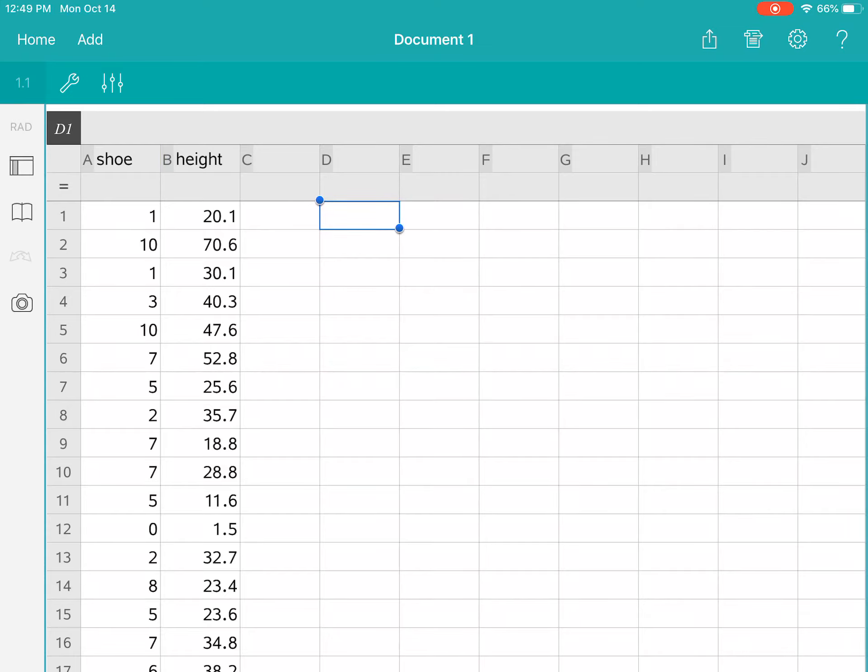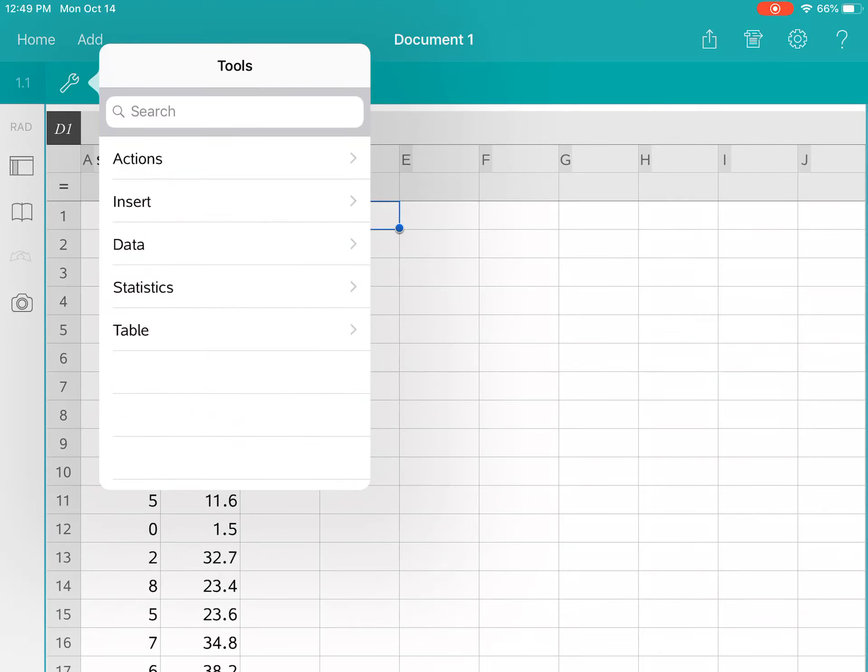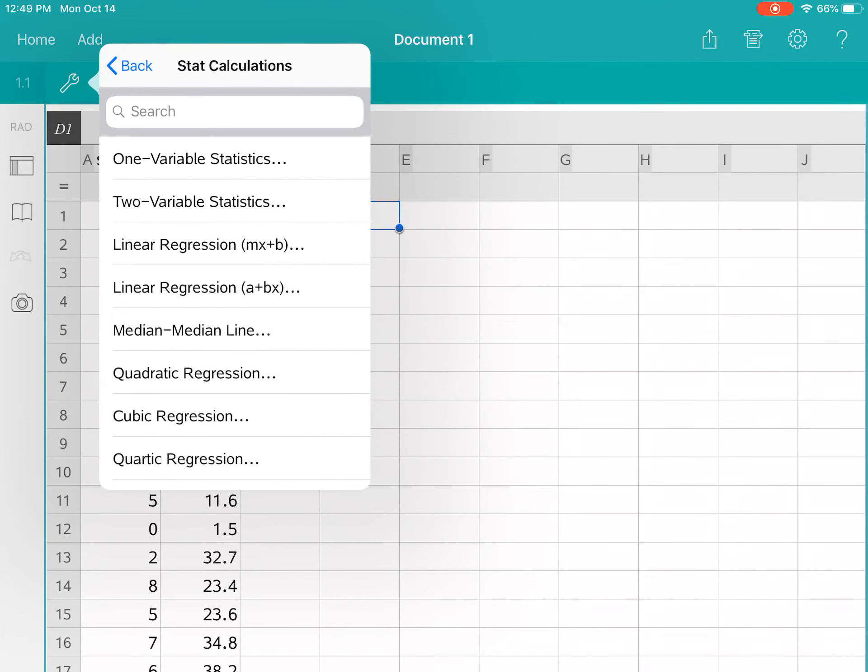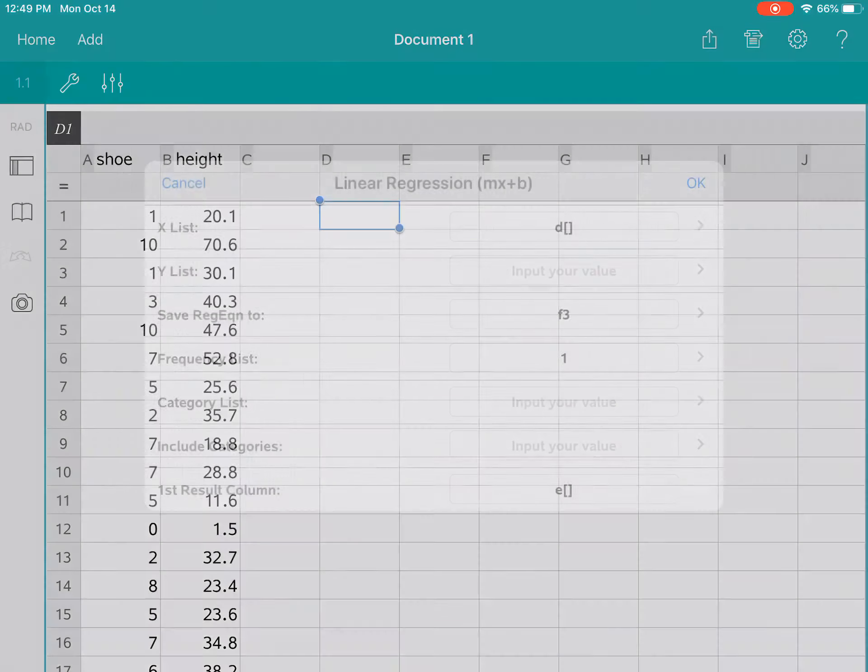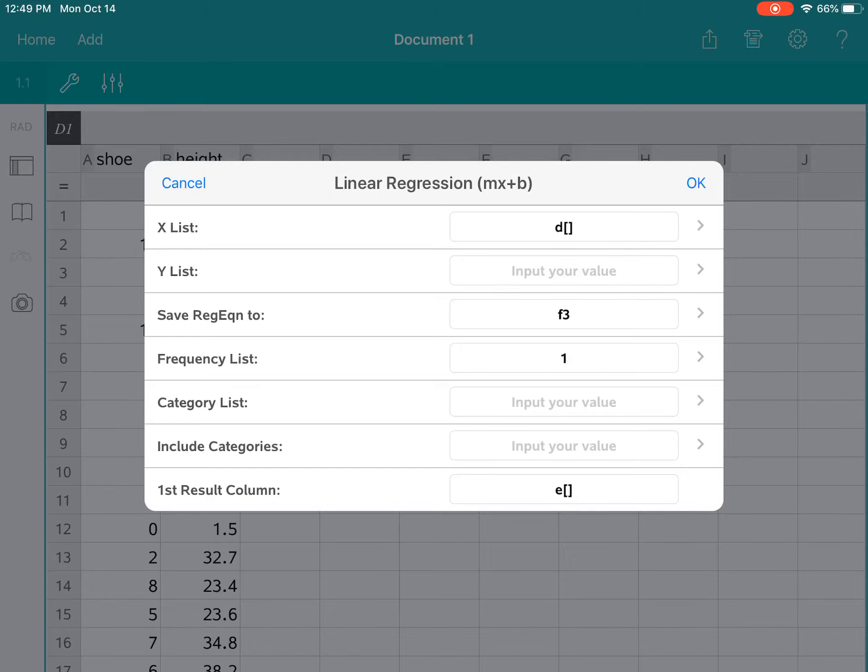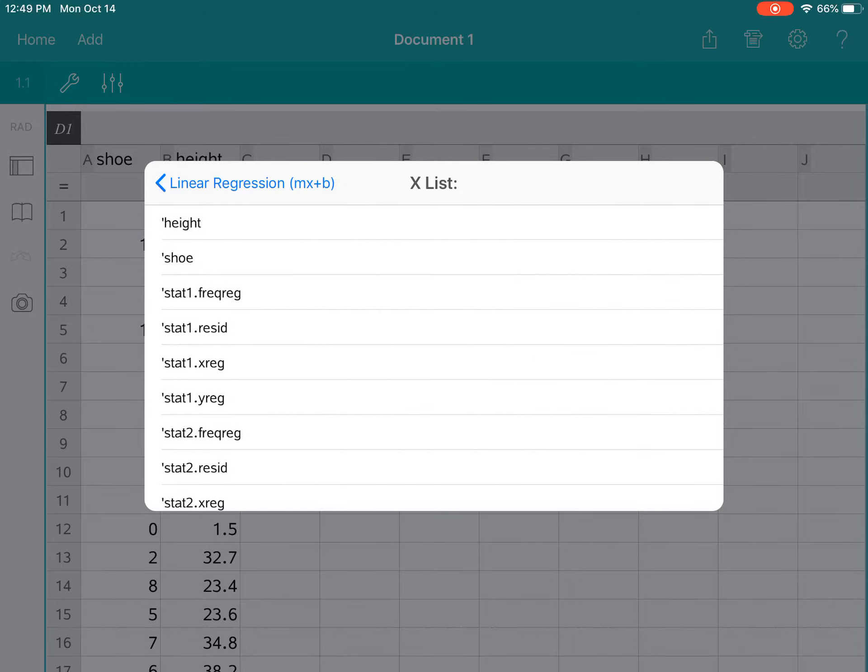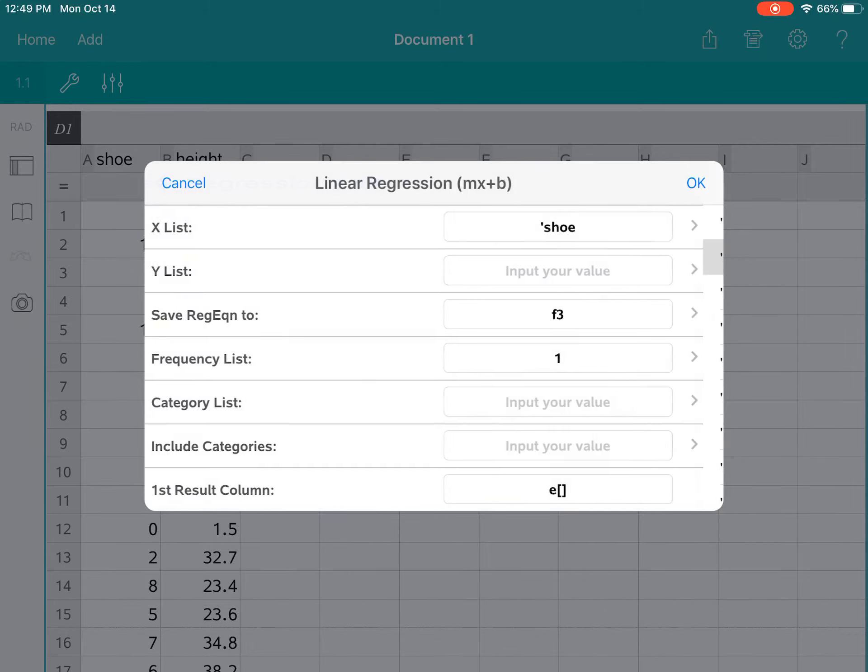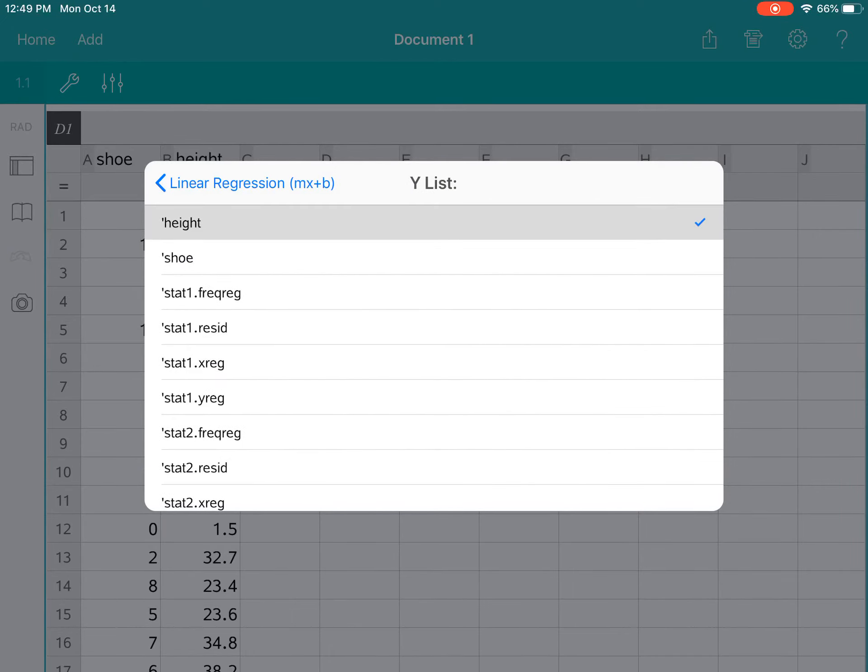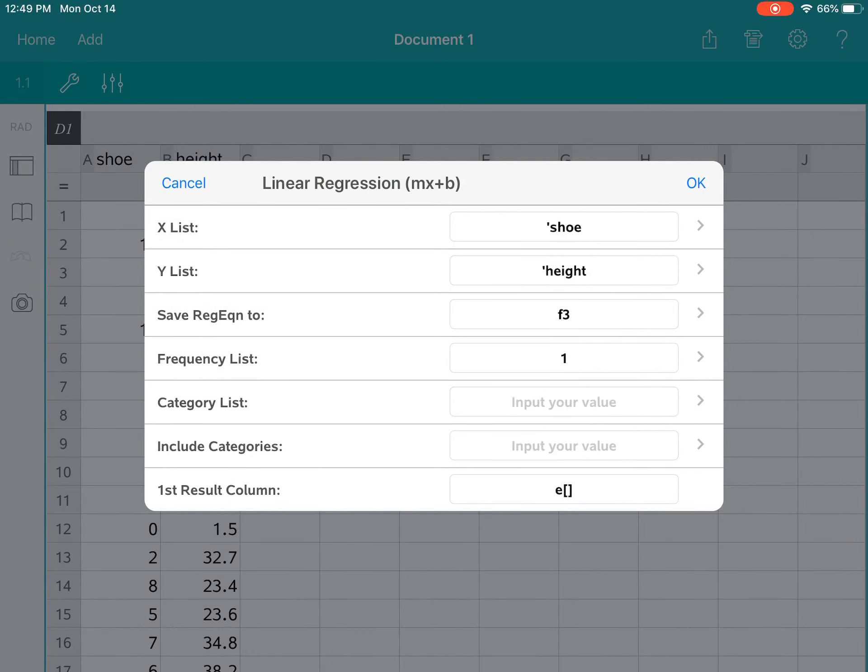Now from here we're going to go to the menu, we're going to go to Stats, we're going to go to Stat Calculations and Linear Regression mx + b. Then we're going to pick those titles that we just picked for the X's and Y's, so the X's were shoe, the Y's were height, and then everything else is good to go.